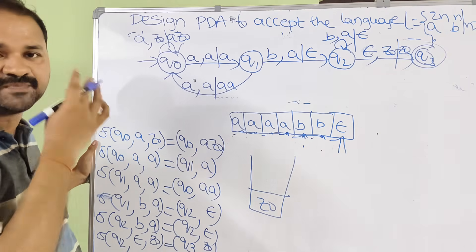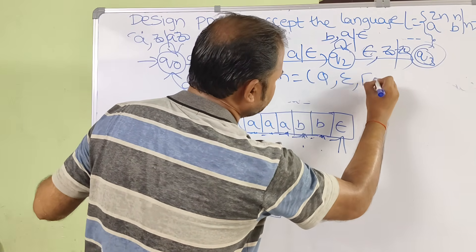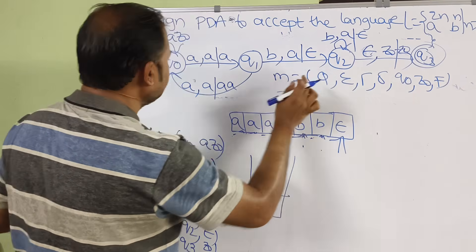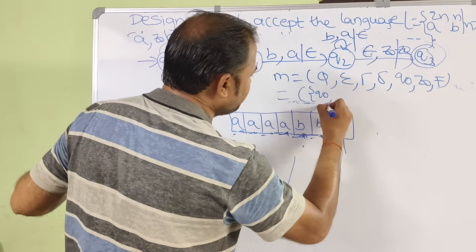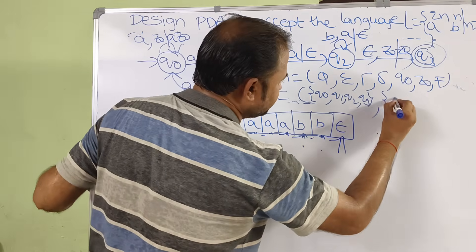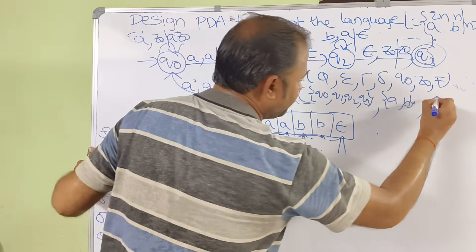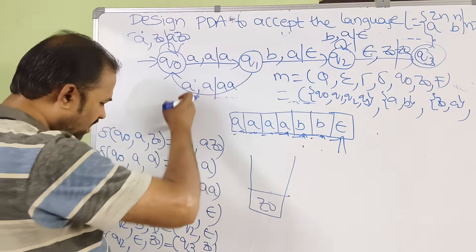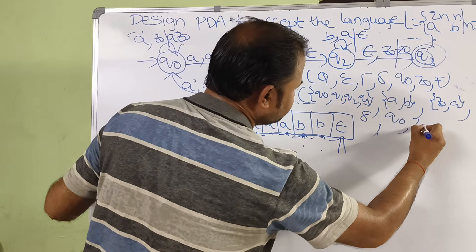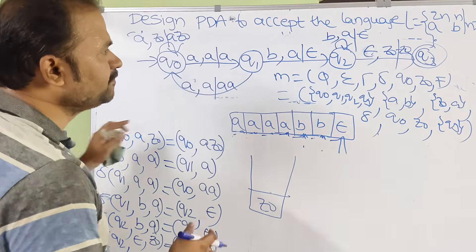Now we formally define the PDA as a seven-tuple (Q, Σ, Γ, δ, Q0, Z₀, F). Q = {Q0, Q1, Q2, Q3}. Σ = {A, B} (input alphabet). Γ = {Z₀, A} (stack alphabet). δ consists of all the transition functions defined above. Q0 is the initial state. Z₀ is the initial stack symbol. F = {Q3} is the set of final states. This completes the PDA design for the language.